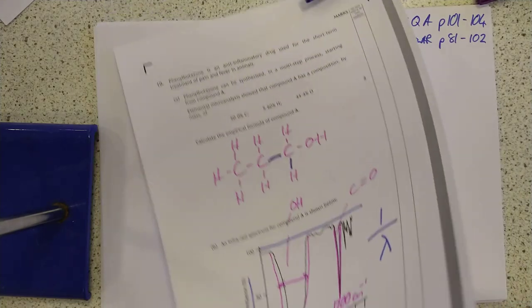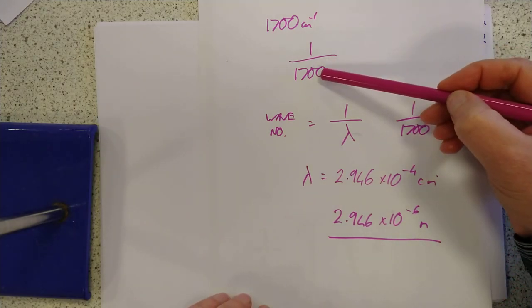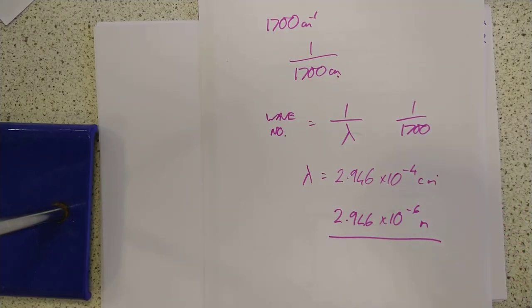And lastly, conversion from wave number to wavelength is do the reciprocal of the wave number first, which gives you wavelength in centimeters, and then turn it into meters and we're done. Thank you for listening.